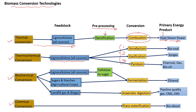In torrefaction, the product obtained is bio-coal, whereas gasification produces syngas as a product. Pyrolysis yields 3 types of products: charcoal, gas, and bio-oil. Pre-processing of raw material depends on the specific process, but size reduction is the most important step — the material must be reduced to a proper size before further conversion.